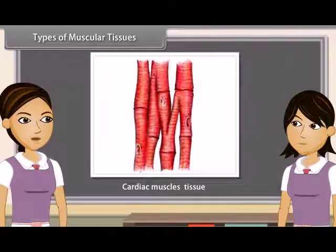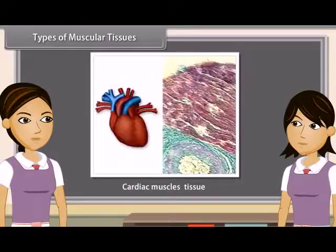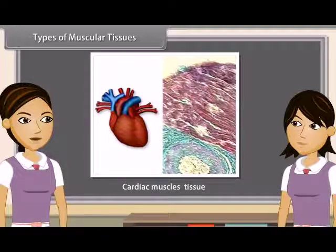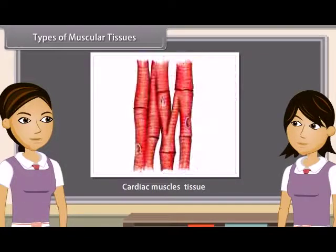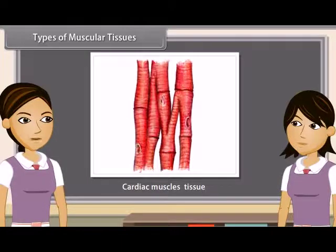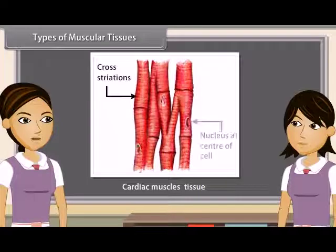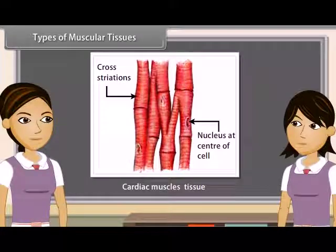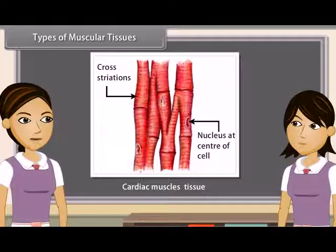Cardiac muscles are found in the myocardium of the heart. They are both striated and smooth muscles. Cardiac muscles are composed of branched fibers whose branches join to form a network. Each fiber is surrounded by sarcolemma and has sarcoplasm with longitudinal myofibrils and a central nucleus. The intercellular spaces are filled with abundant loose connective tissue supplied with blood capillaries.